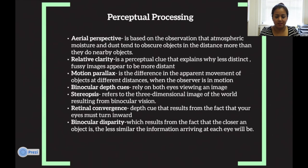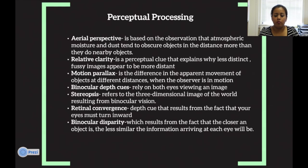Aerial perspective is based on the observation that atmospheric moisture and dust tend to obscure objects in the distance more than they do nearby objects. Relative clarity is a perceptual cue that explains why less distinct or fuzzy images appear to be more distant. Motion parallax refers to the difference in the apparent movement of objects at different distances when the observer is in motion.